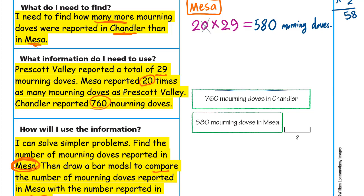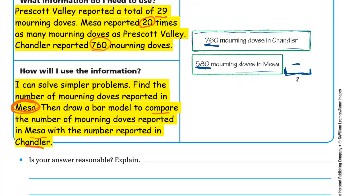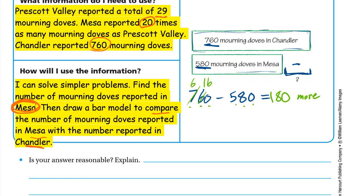Now compare Mesa to Chandler using a bar model. Chandler is greater, so draw a bigger bar for Chandler: 760. Mesa has only 580. The difference — how many more Chandler has than Mesa — is what we need. Subtract: 760 minus 580. 0 minus 0 is 0; 6 minus 8 requires borrowing, giving 16 minus 8 is 8; 6 minus 5 is 1. So 180 more mourning doves in Chandler.